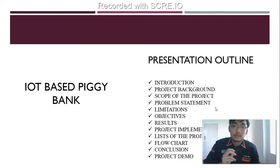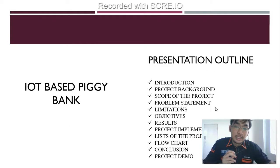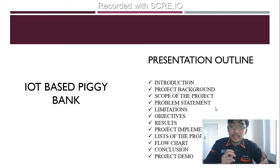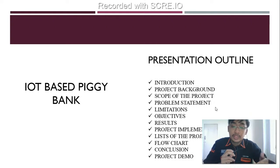For my presentation outline: introduction, project background, scope of the project, problem statement, limitation, objective, phase-up, project implementation, list of the project, flowchart, conclusion, and project demo.